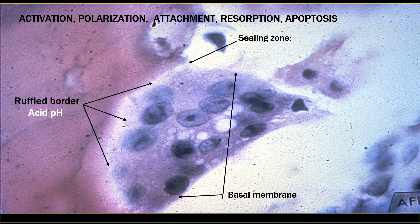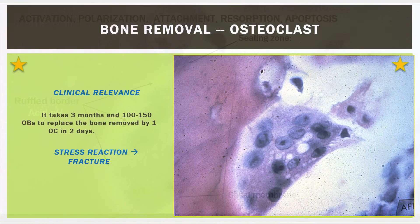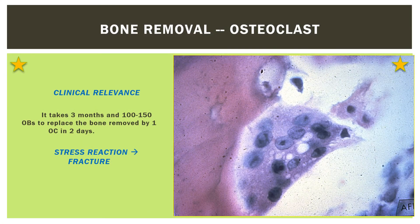The osteoclast cell undergoes apoptosis after one to two days. The divot created is called a Howship's lacuna. An osteoclast, packed with mitochondria for energy, deletes three times its cell volume over its short life.